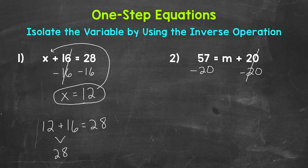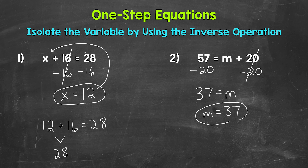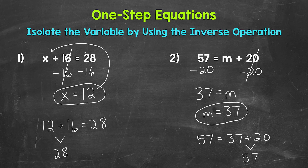They equal 0. We are left with our isolated variable of m. So m equals, and then on the left side of the equation, 57 minus 20 equals 37. So m equals 37. And we can rewrite this with the variable coming first. m equals 37. Let's check that solution by plugging 37 in for m in the original equation. So 57 equals 37 plus 20. 37 plus 20 does equal 57, so we have the correct solution. m equals 37.